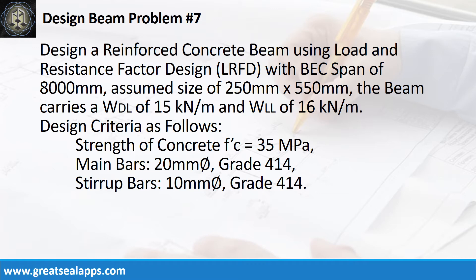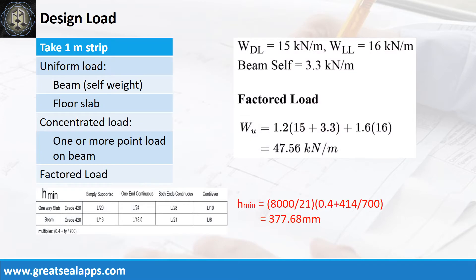Strength of concrete: 35 MPa. Main bars: 20 mm bar, grade 414. Stirrup bars: 10 mm bar, grade 414. The beam's self-weight is 3.3 kN per meter, for a factored load of 47.56 kN per meter.